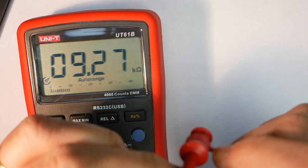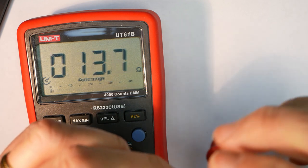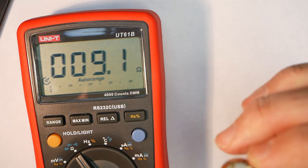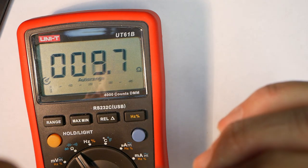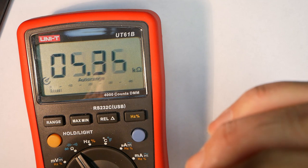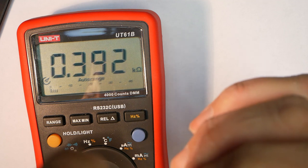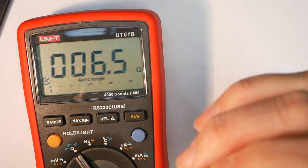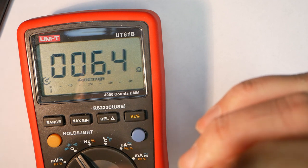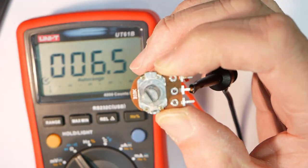Now if we put one measurement probe in the center and then we vary the potentiometer, you see the resistance changes. And the lowest resistance is when we're in this direction, on the furthest part of the way.